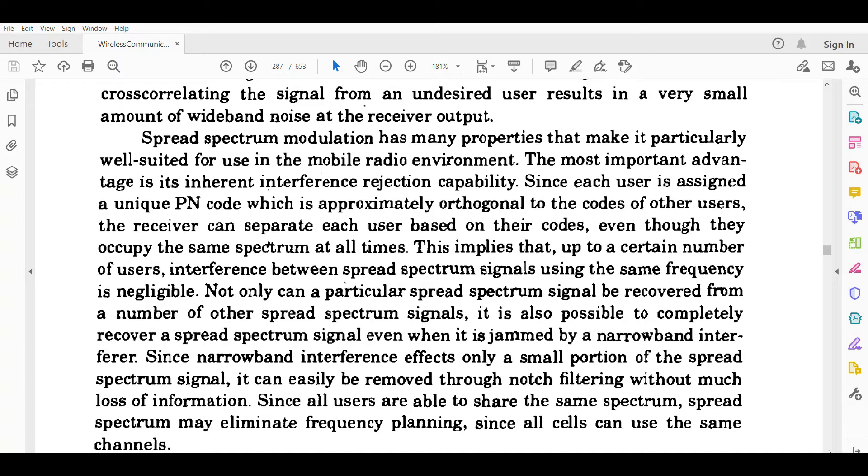This implies that up to a certain number of users, interference between the spread spectrum signals using the same frequency is negligible. Not only can a particular spread spectrum signal be recovered from a number of other spread spectrum signals, it is also possible to completely recover a spread spectrum signal even when it is jammed by a narrowband interferer.